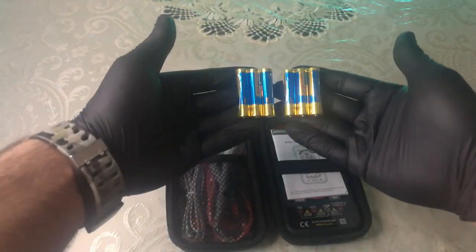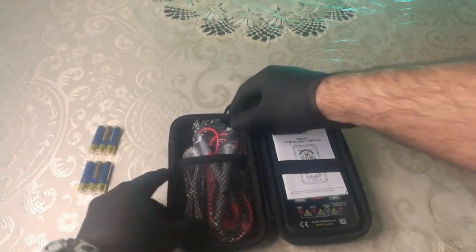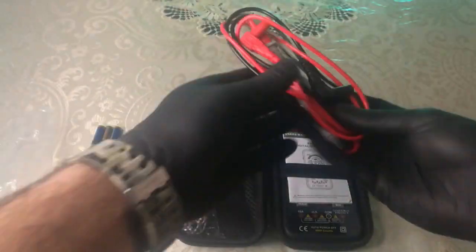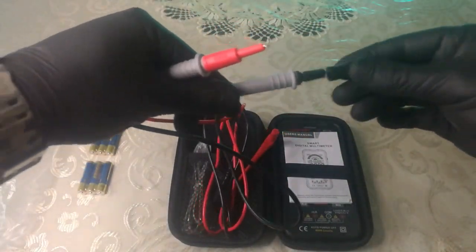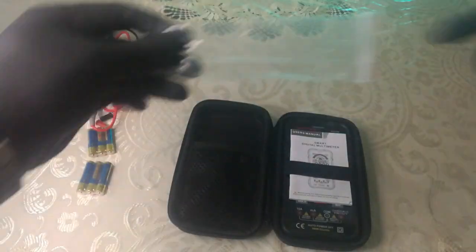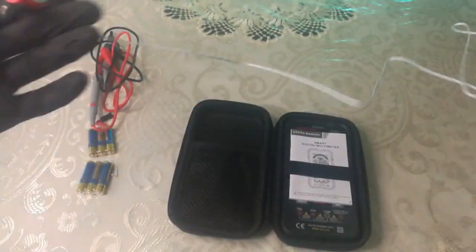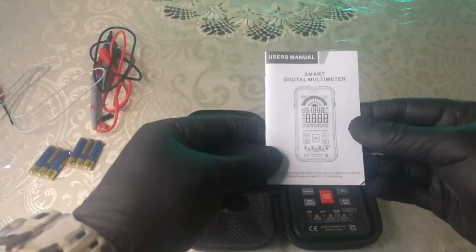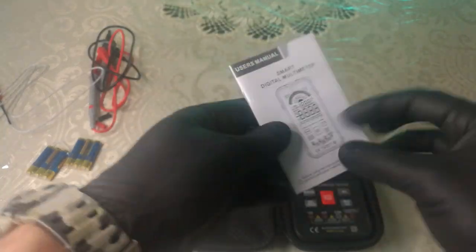We got two packs of triple-A batteries, the black and red probes for measuring, the thermocouple for measuring temperature, and the tiny user manual with 42 pages in English language.